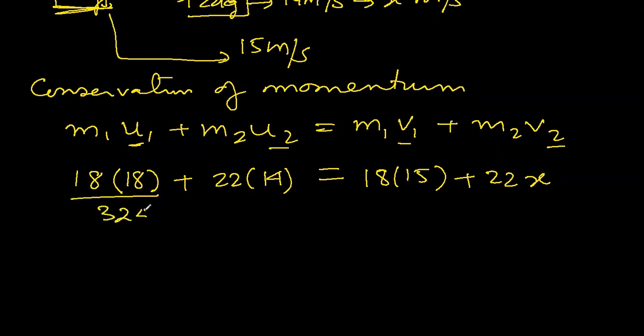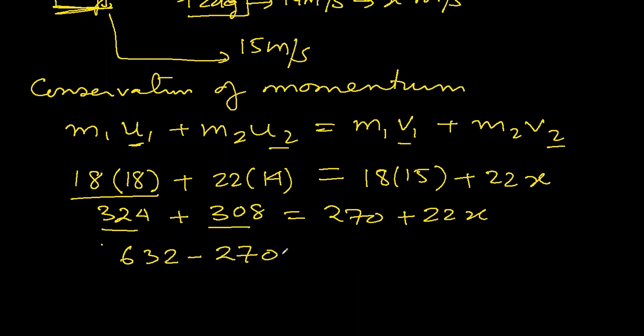So 324 plus 308 will be 632 minus 270 equals 22x. This will be 362 equals 22x, so x will be equal to 362 over 22. Let me divide this.